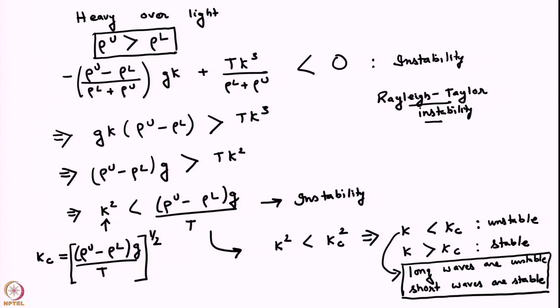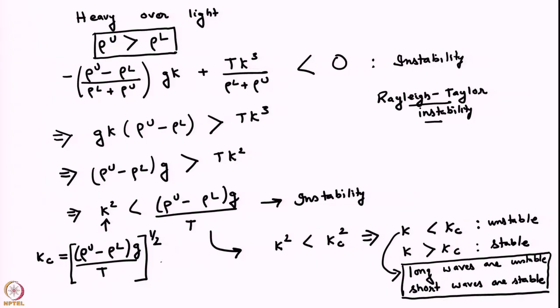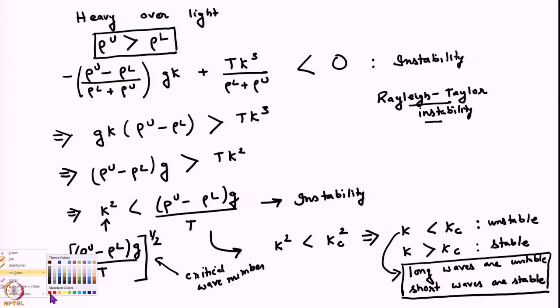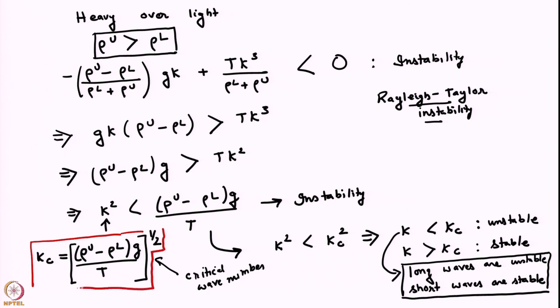More interesting was the fact that not all modes are unstable — it is only some modes which are unstable. We had also seen that sufficiently long waves are unstable whereas sufficiently short waves are stable. We had found a critical wave number such that K less than Kc was unstable and K greater than Kc was stable.